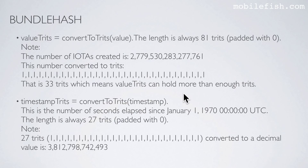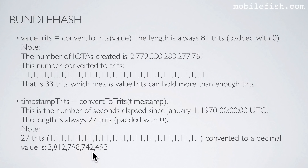The timestamp is the number of seconds elapsed since January 1, 1970. The timestamp needs to be converted to trits. The length is always 27 trits. If not, it is padded with zeros. 27 trits looks like this, and converted to a decimal value is this large number.